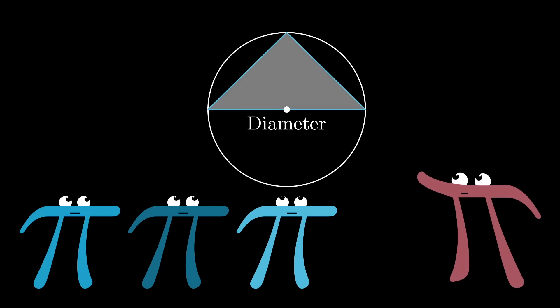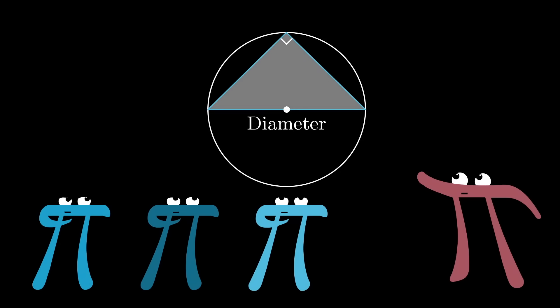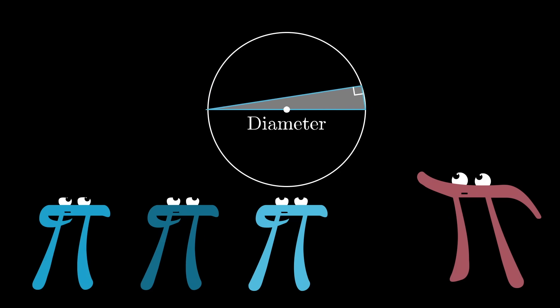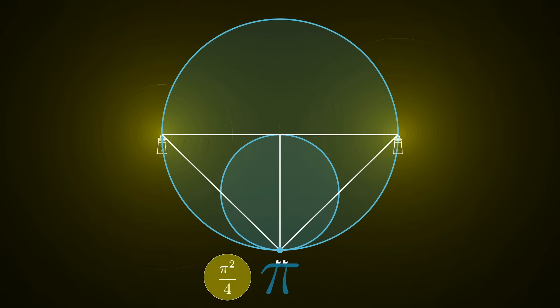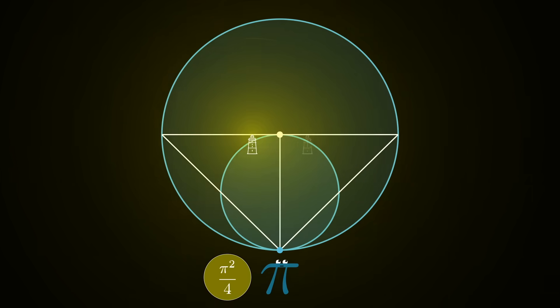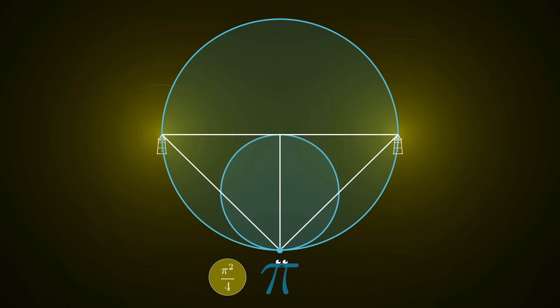An important fact from geometry that we'll be using over and over here is that if you take the diameter of a circle and form a triangle with any point on the circle, the angle at that new point will always be 90 degrees. The significance of that in our diagram here is that it means the inverse Pythagorean theorem applies, and the brightness from those two new lighthouses equals the brightness from the first one, namely pi squared divided by 4.